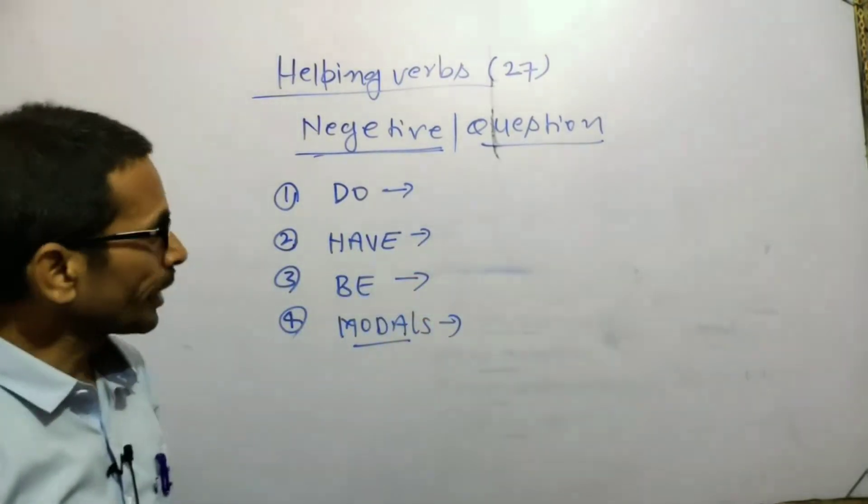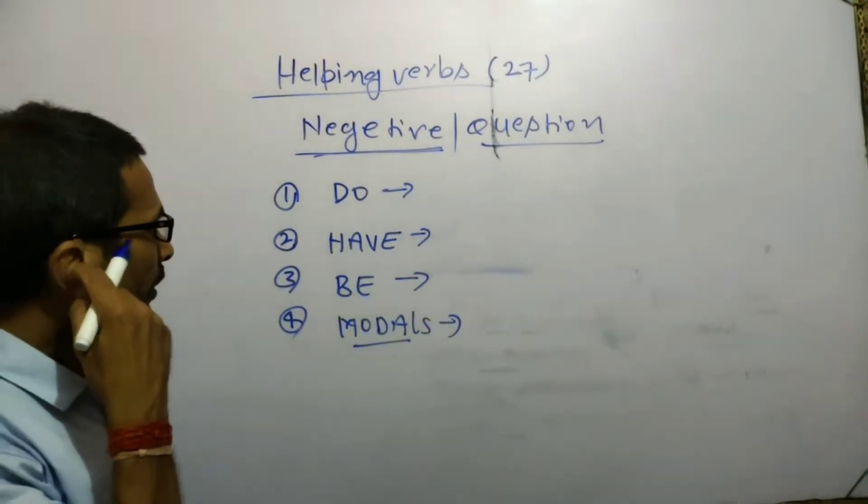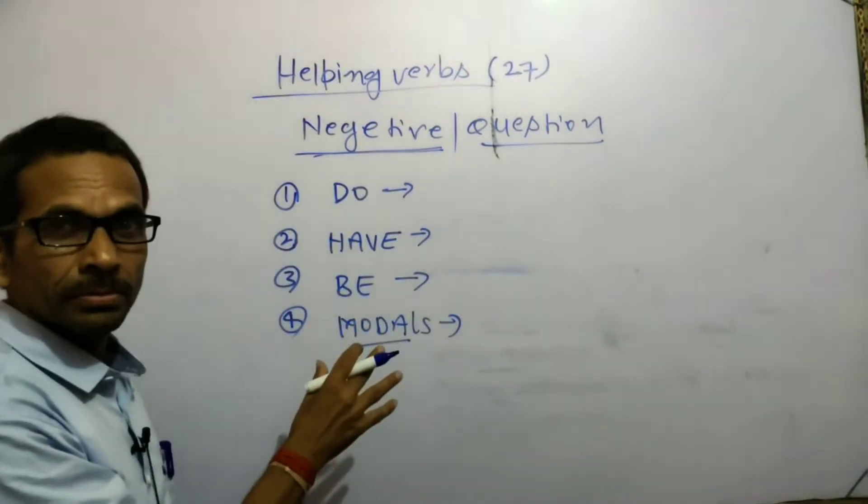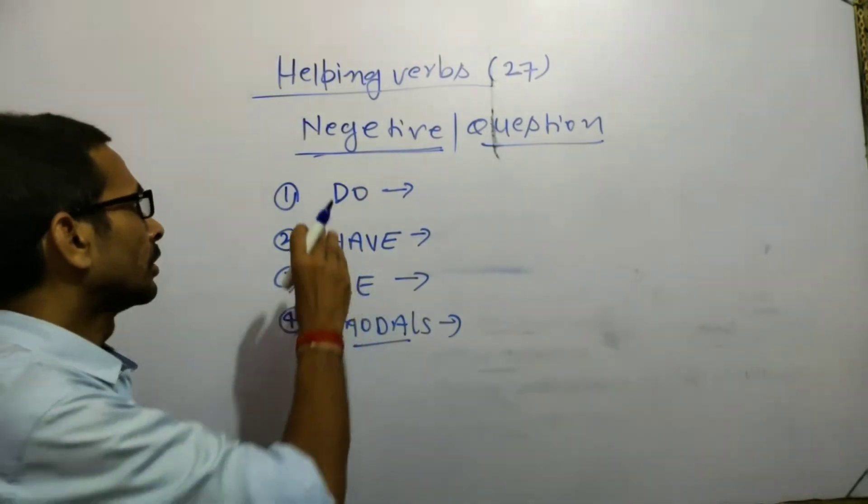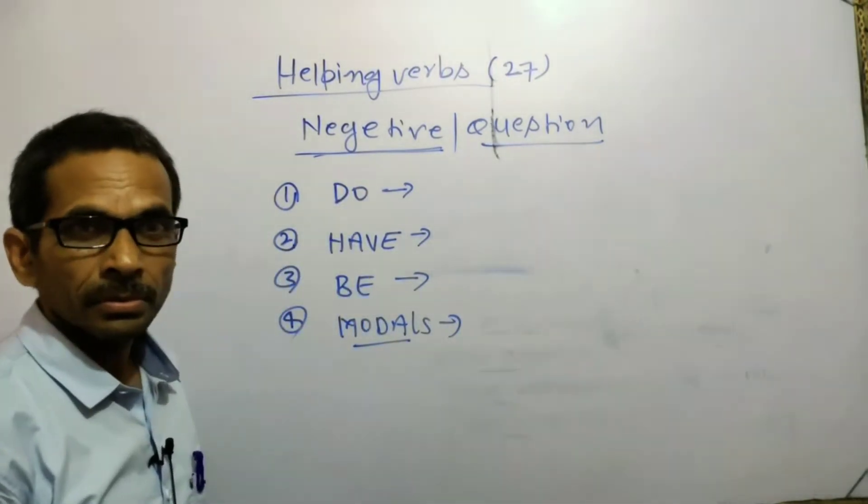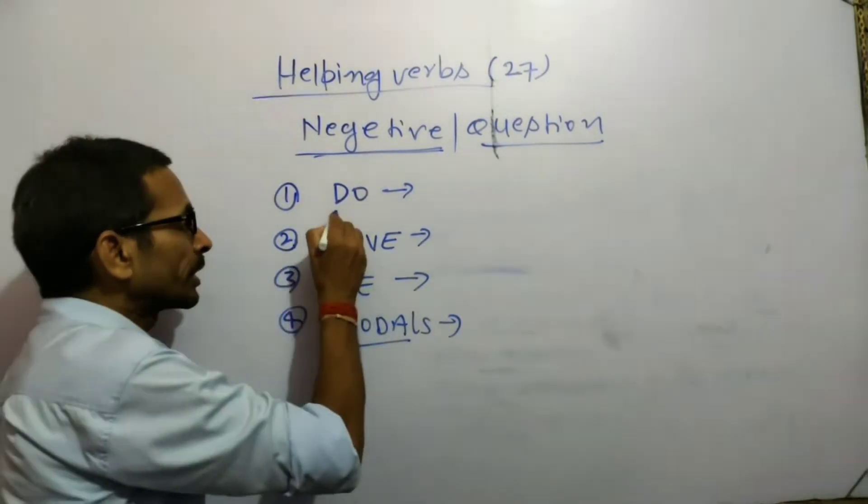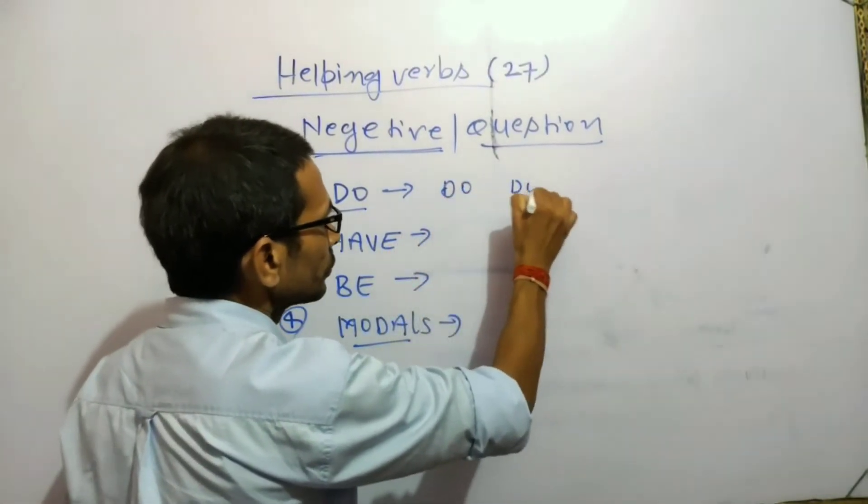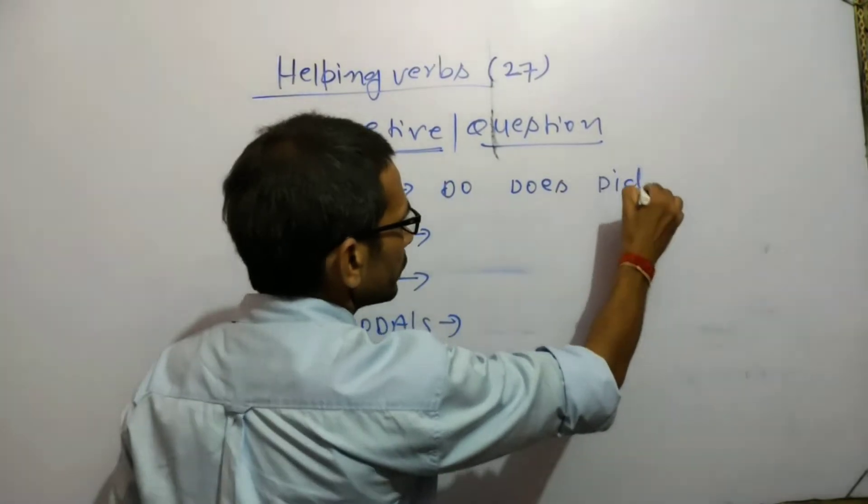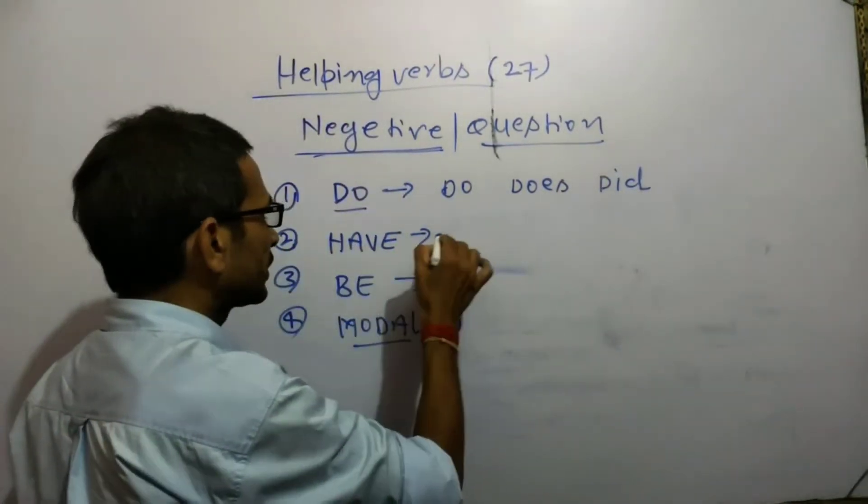My dear students, here are the four major groups of helping verbs. DO contains three different forms: do, does, did.